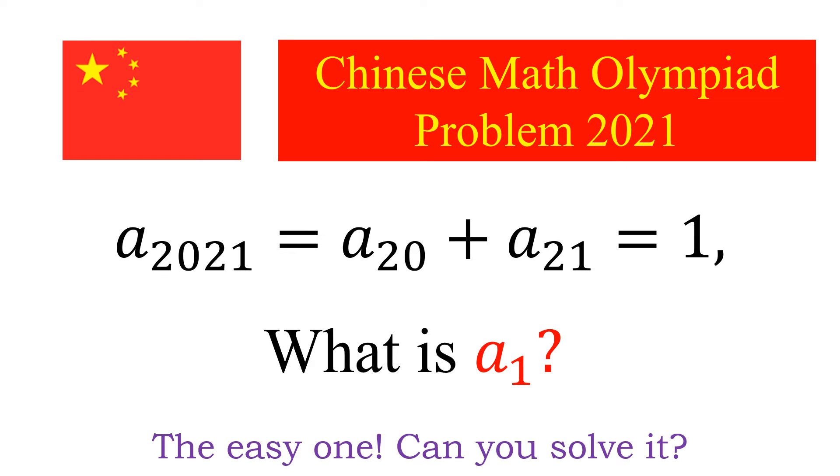Welcome back to my YouTube channel. In today's video, we are going to solve this question. The question is: in an arithmetic progression, A₂₀₂₁ is equal to A₂₀ plus A₂₁ is equal to 1. What is a₁?